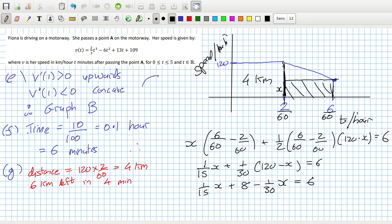So 6 minus 8 divided by 1/15 minus 1/30. Perhaps I got a negative answer. Yeah, because I have the signs backwards. Plus 1/30 and minus 1/15. So x is 60 then. So he had to slow down to 60.